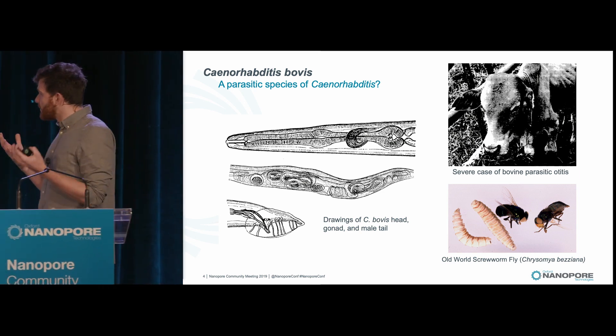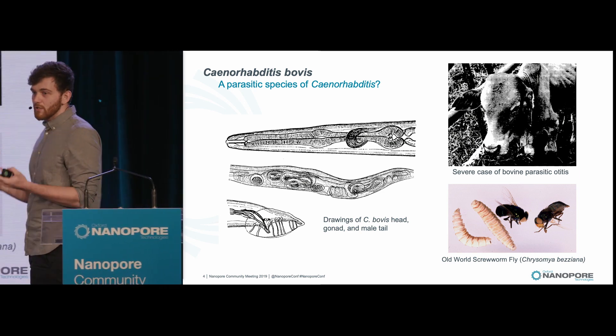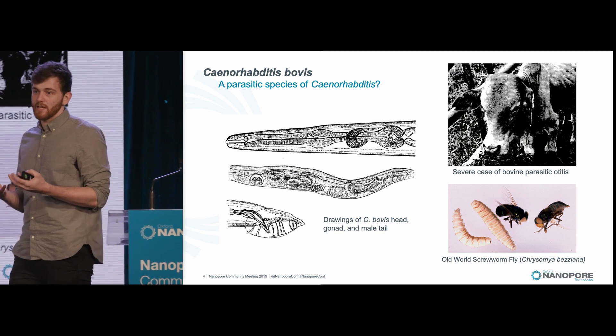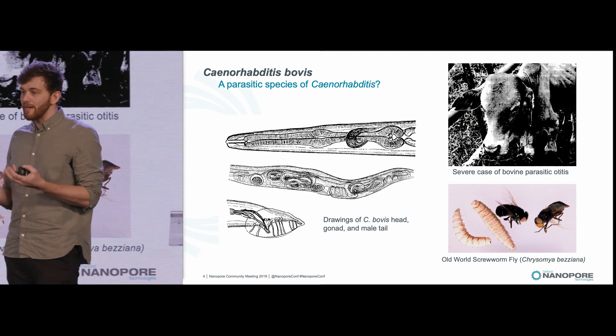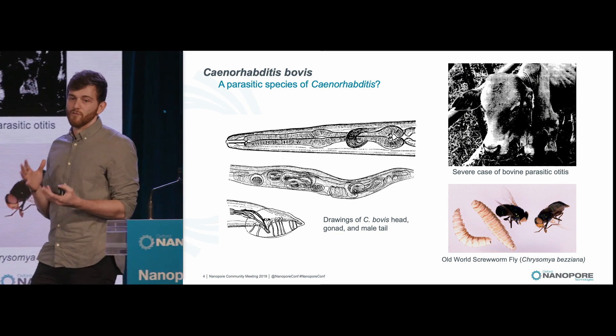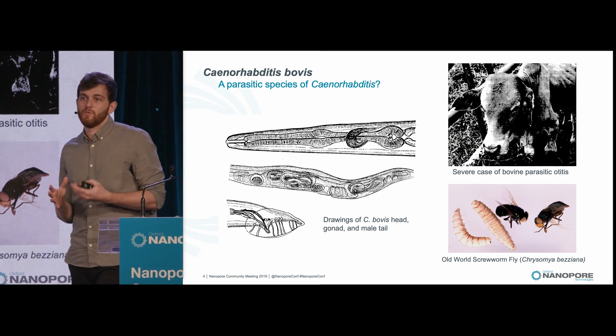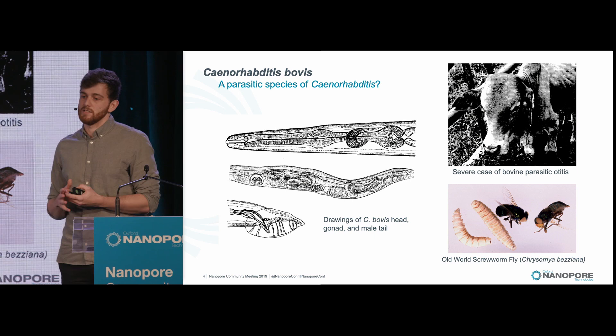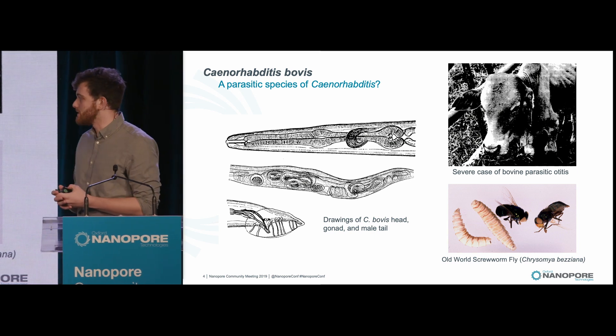C. bovis is a really unusual species, really closely related to C. elegans, but we know very little about it. There's just a handful of papers from the 80s and 90s describing it in these cows.